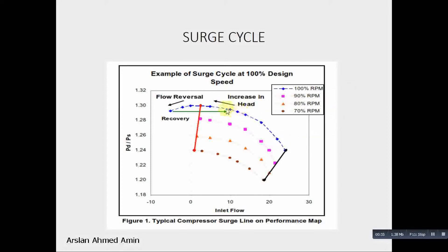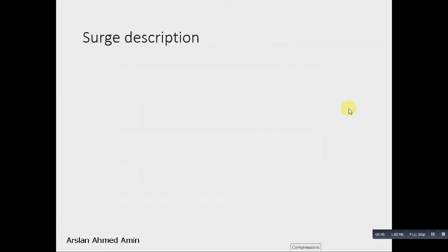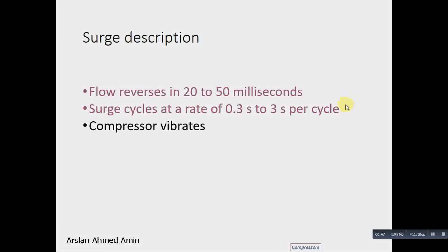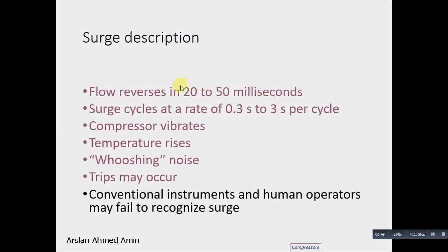The compressor is operating at 100%. This is the time domain profile of the surge. The flow reverses in 15 to 20 milliseconds. The surge cycle repeats at a rate of 0.3 seconds to 3 seconds per cycle.